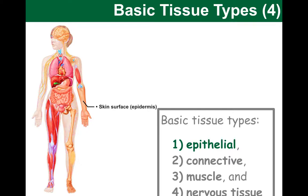Another good example is epithelial tissues that line the digestive tract and other hollow organs. These as well form boundaries, protect, secrete, absorb, and filter materials.